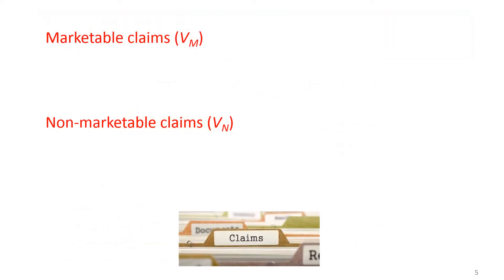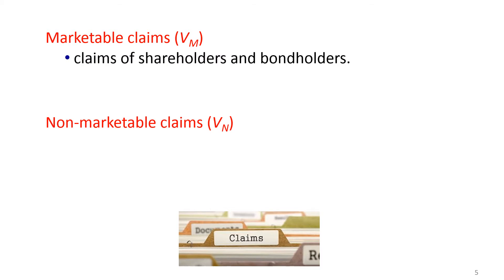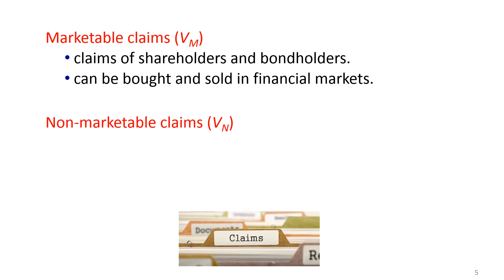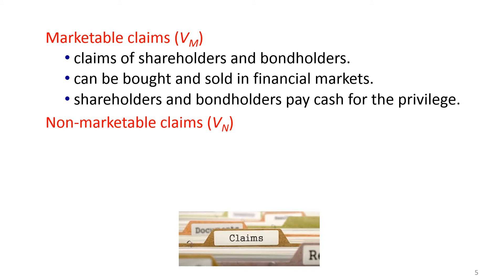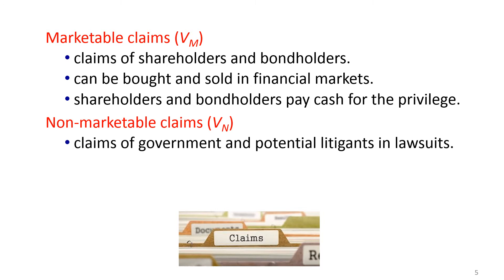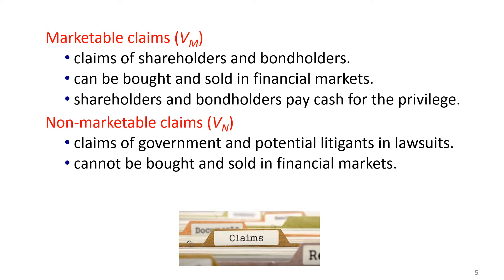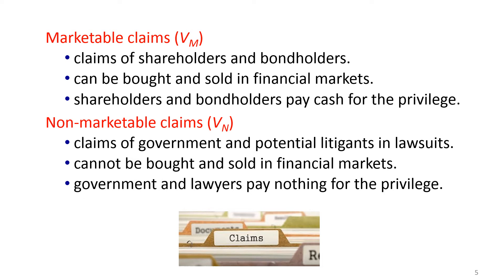What are the key differences between marketable claims and non-marketable claims? Marketable claims refer to claims of shareholders and bondholders — they can be bought and sold in the financial markets, and shareholders and bondholders pay cash for the privilege. On the other hand, non-marketable claims refer to claims of the government and potential litigants in lawsuits — they cannot be bought and sold in the financial markets, and the government and lawyers pay nothing for the privilege.